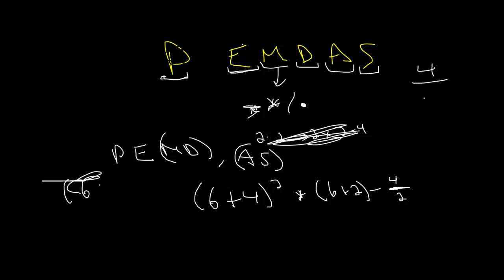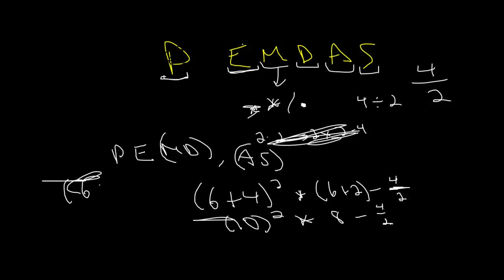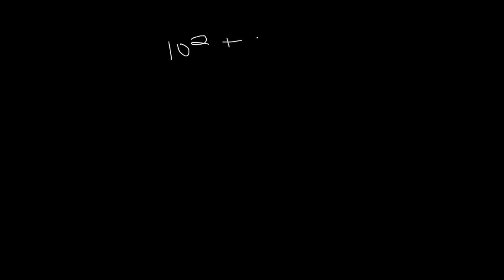I'll go over that right now. We can write division by putting something on top and drawing a line on the bottom — basically saying 4 divided by 2 — which is an easy way to write that. Let's say we had this really complicated expression. The first thing we're going to want to do are the parentheses, so we'd have 10 squared plus 8 minus 4 halves.